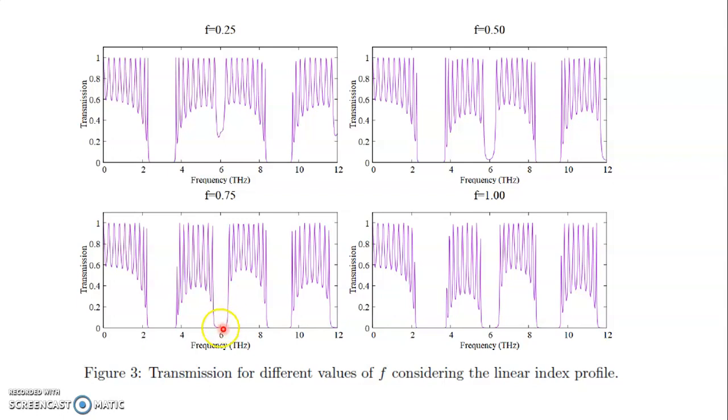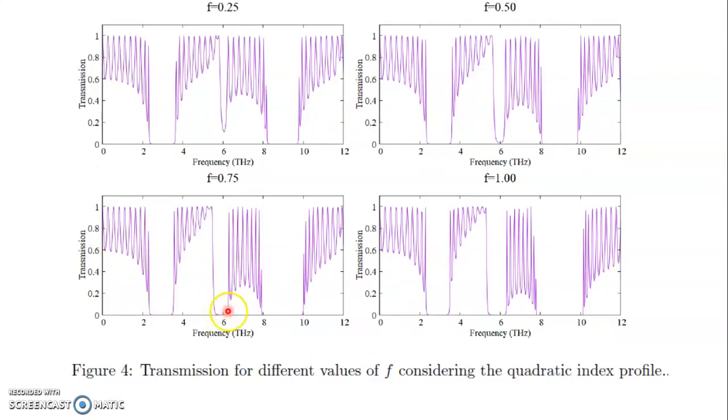But for the quadratic one, we observe also the formation of new photonic band gaps, but here the central frequency is shifted to lower values of the frequency, a red shift for the central frequency.